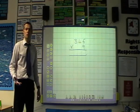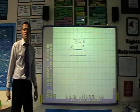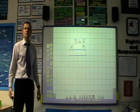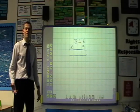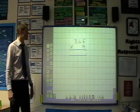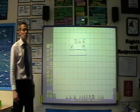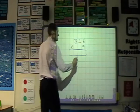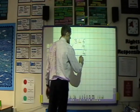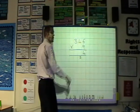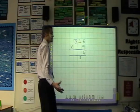In years 5 and 6, or when the children are proficient with the partitioning method, we introduce the compact method which many parents will be familiar with. So on this previous example, this time we will multiply 6 by 9 first which is 54. Important to put the 4 and the 5 in the right places, many children get that wrong.